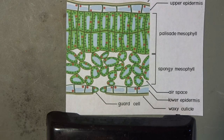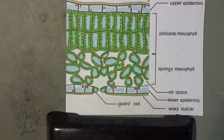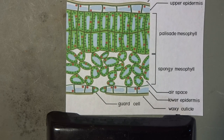Xylem are vascular bundles that conduct water from the roots of a plant up through the entire plant to the leaves. Nutrients are transported from the leaves down to the roots of plants by the vascular bundles called phloem. The palisade mesophyll layer is where most of the photosynthesis occurs in the leaf by means of chloroplasts. To maximize light absorption, the palisade cells are closely packed together. The spongy mesophyll allows the interchange of carbon dioxide needed for photosynthesis, and the spongy mesophyll cells are less likely to undergo photosynthesis than those in the palisade mesophyll.